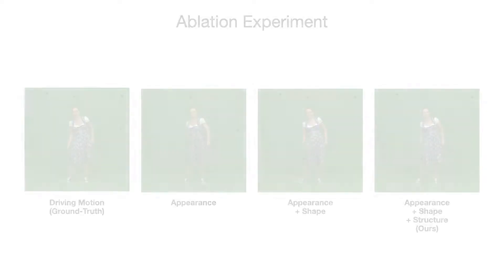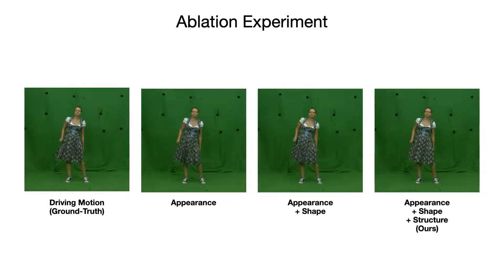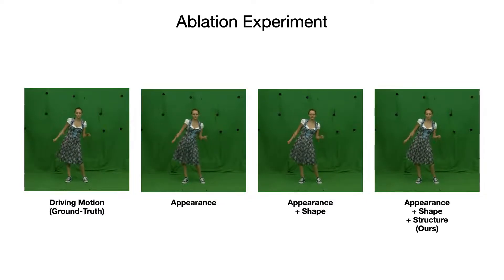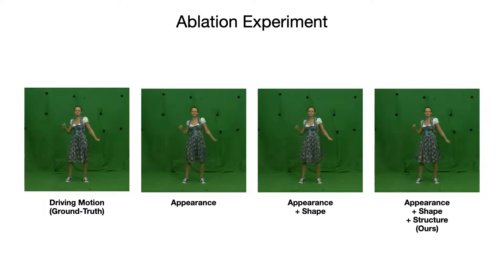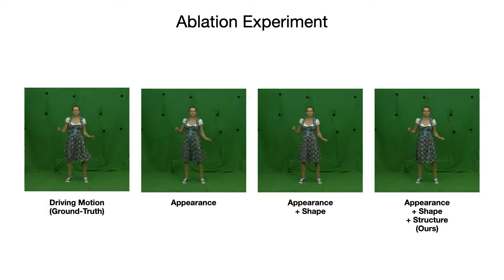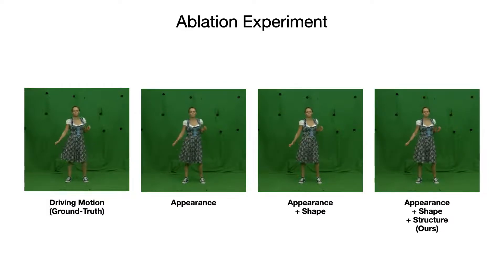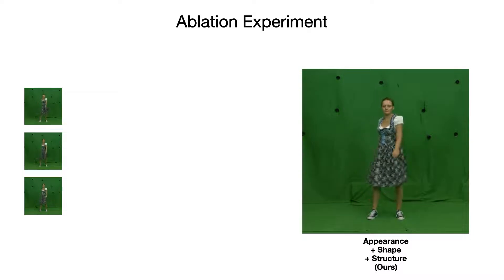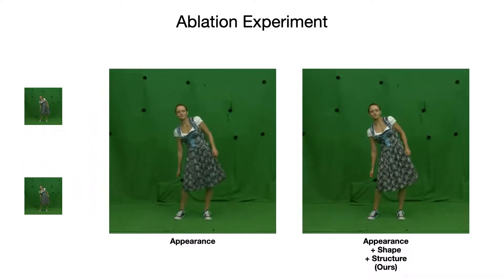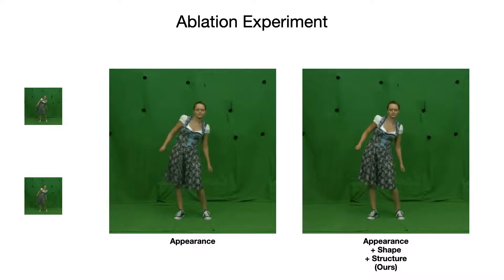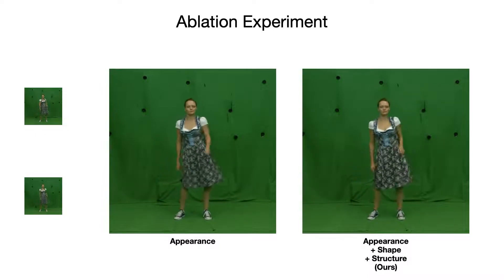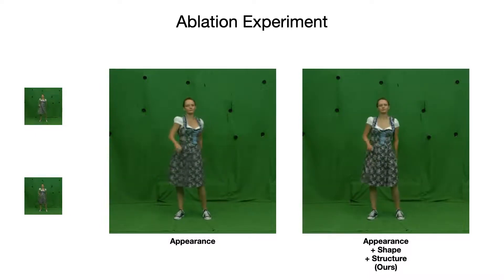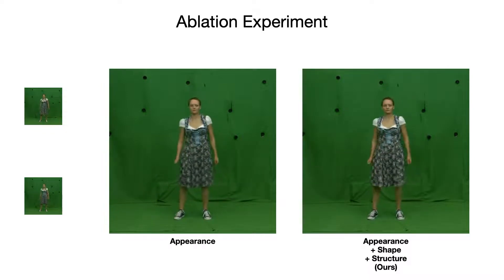We demonstrate the effectiveness of our framework components in an ablation experiment. We use one of our most complicated video sequences, featuring a swinging dress with fine texture detail, and retrain our appearance network conditioned on pose, a combination of pose and shape, and our final version including pose, shape, and clothing structure. Without the 2D shape prior, our plain appearance net struggles to produce clean outlines of body parts, leading to blending artifacts for the arms and hands with the rest of the image.